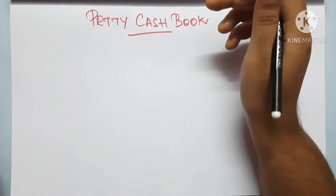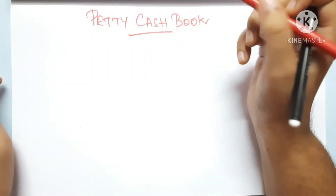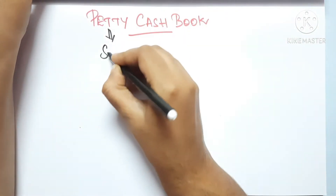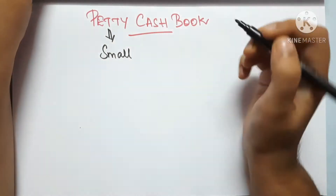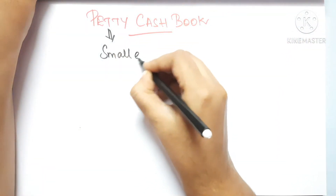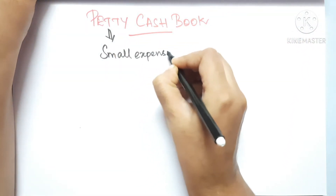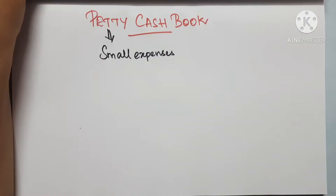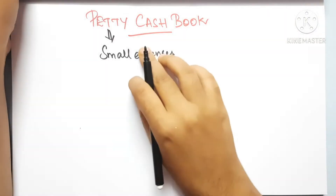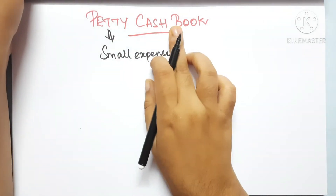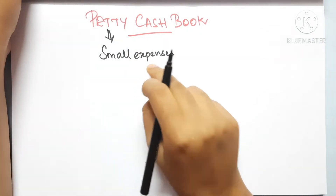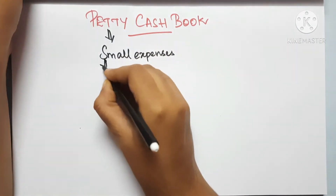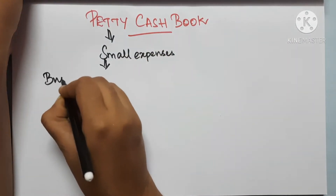We are going to talk about petty cash books. Petty means small. We are going to talk about expenses and receipts. So petty cash records small expenses - this is the first point. Petty cash is recording all small expenses, for example business-related transactions for a business entity.